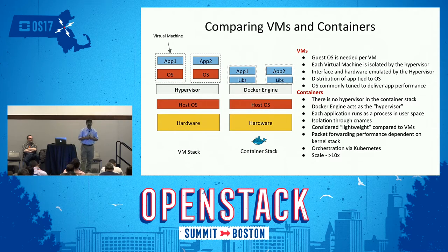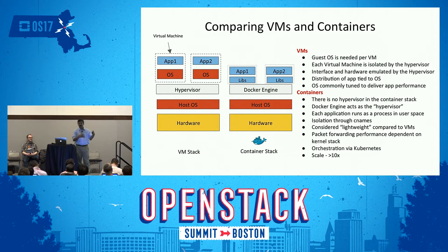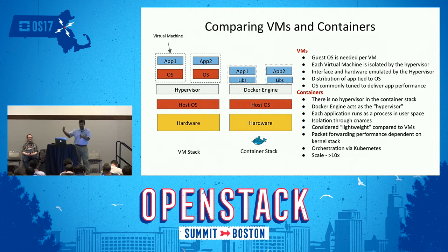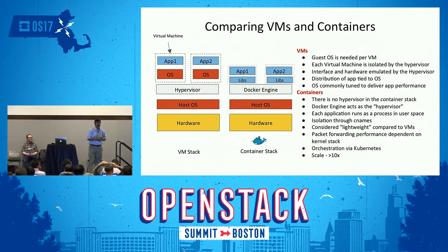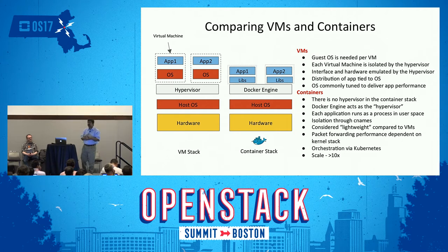In a quick VM-versus-container comparison: VMs require their own host OS and run on top of a hypervisor, adding overhead from the guest OS. Containers run natively as a process on the host — Docker engine provides some capabilities and separations but there's no hypervisor. Isolation is through CGroups and namespaces; they are much lighter weight. You can orchestrate containers via Kubernetes, and the typical expectation is they scale better than 10x compared to VMs.